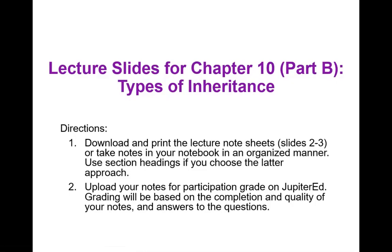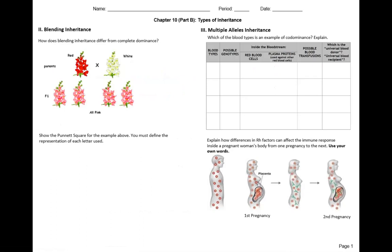Hello students. This part of the lecture is a continuation of chapter 10, focusing on the different types of inheritance involved in the inheritance of body traits. Please download and print out the next two slides for note recording. If you have trouble printing, use the section headings to guide your note-taking process and use the questions provided to record the key concepts.